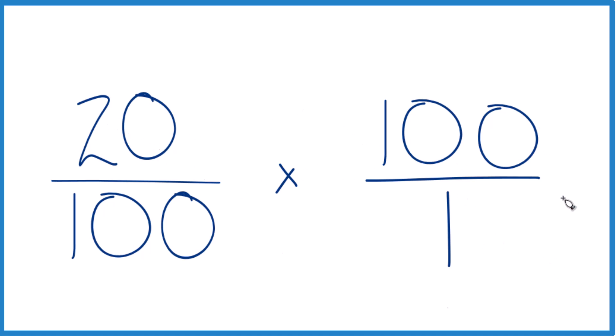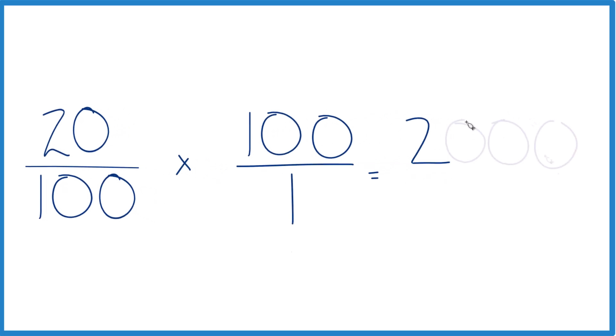So we multiply 20 times 100, that gives us 2,000. Then 100 times 1, that gives us 100. And 2,000 divided by 100, just cross these out here, 20 over 1, that's just 20.